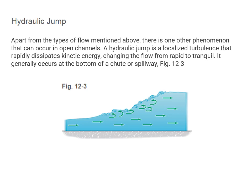Hydraulic jump is another kind of flow that you often see. It is a localized turbulence that rapidly dissipates kinetic energy, changing the flow from rapid to tranquil. It generally occurs at the bottom of a chute or spillway.